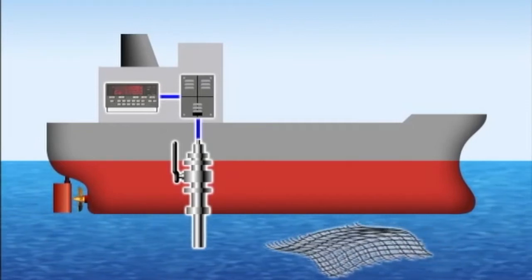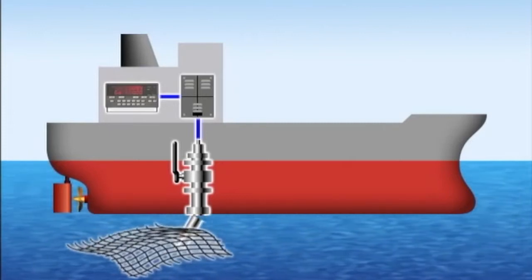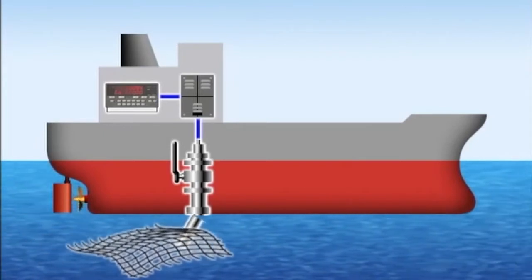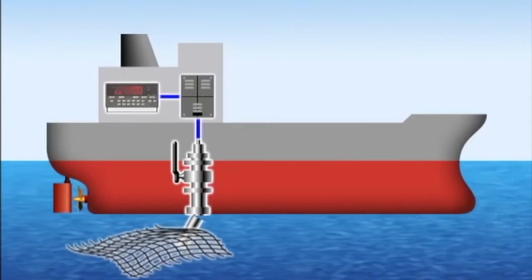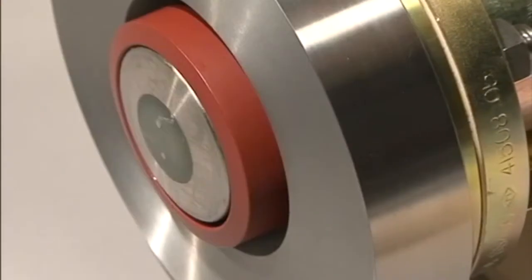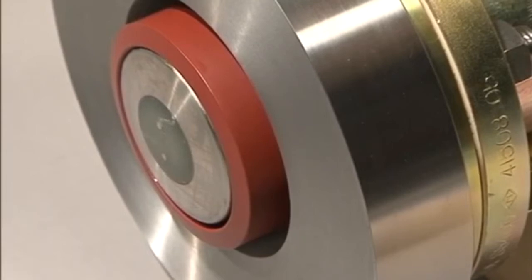However, the sensor is at risk of colliding with obstacles such as driftwood. Therefore, the newest EM logs are flat and the sensor does not protrude from the hull bottom.